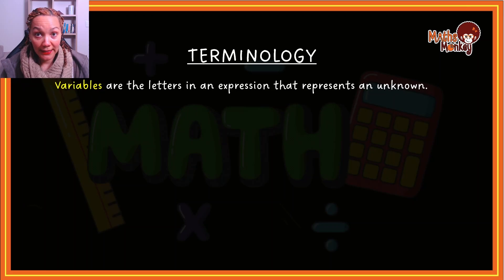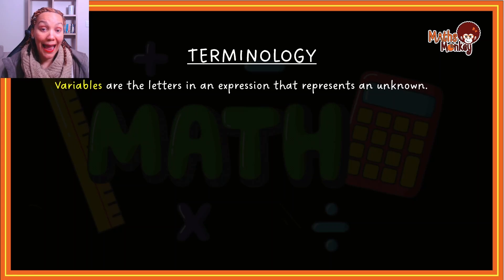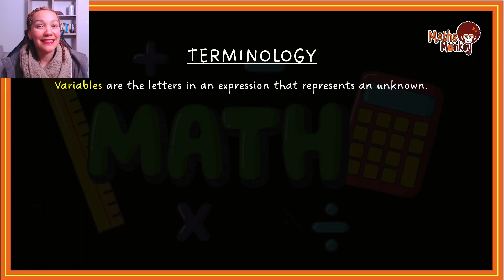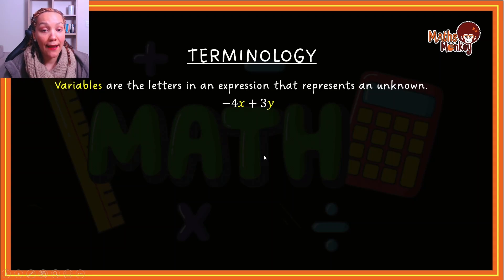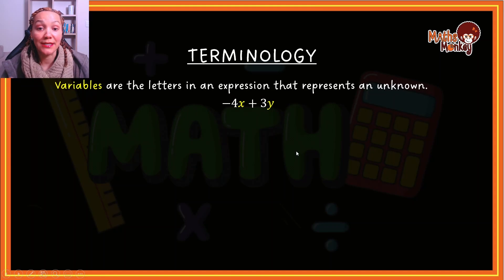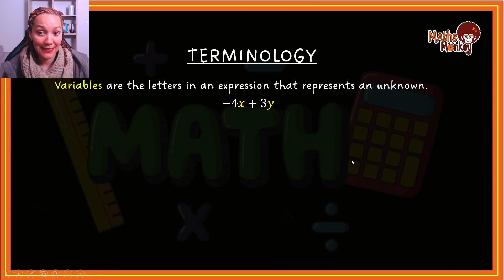If I've got two letters in an equation, so let's say I've got x and I've got y, then x represents a specific number and y represents a specific number, and x and y don't represent the same number. So if I look at this expression: minus 4x plus 3y — in this case x is a variable on its own and y is a variable on its own, and both of these represent two different unknown values.